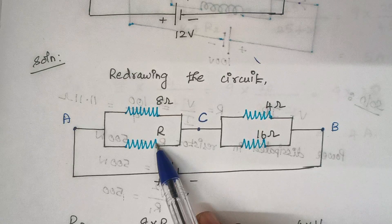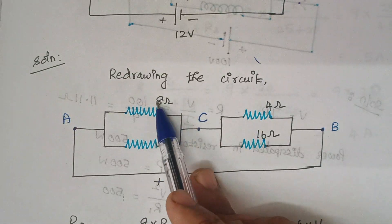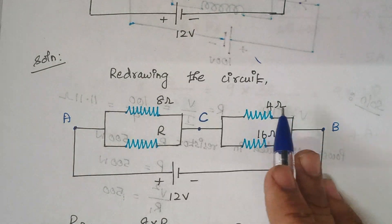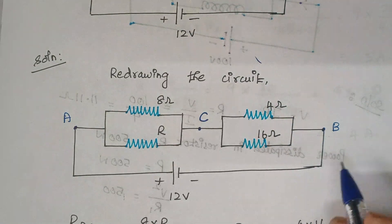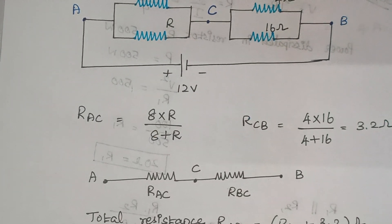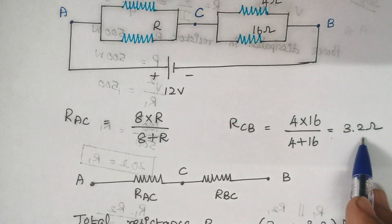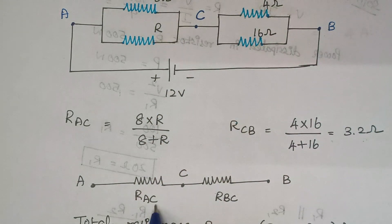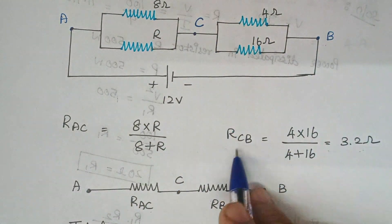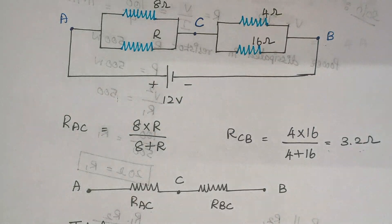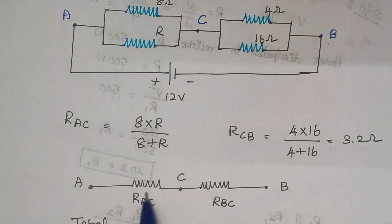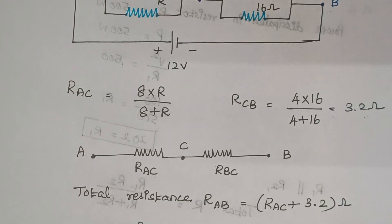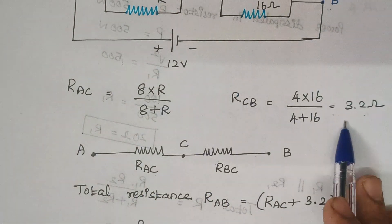This is a parallel combination. To calculate the equivalent resistance, you have to multiply 8 into R divided by 8 plus R. Similarly, here we have two resistors in parallel, so again 4 into 16 divided by 4 plus 16. The respective answer is 3.2 ohms. Again, I am simplifying this circuit. The resistors between A and C is R_AC, and between C and B is R_BC. These two resistors are connected in series, so you have to add. The total resistance is R_AC plus R_BC, where R_BC is 3.2.